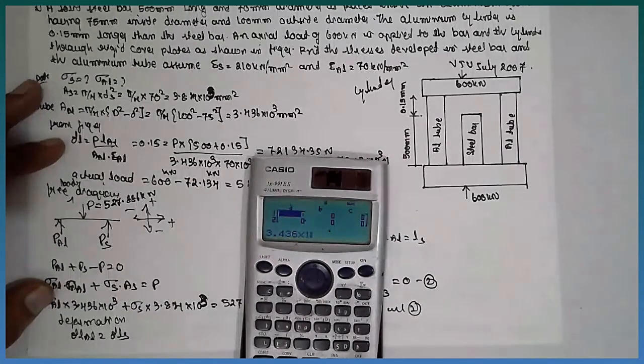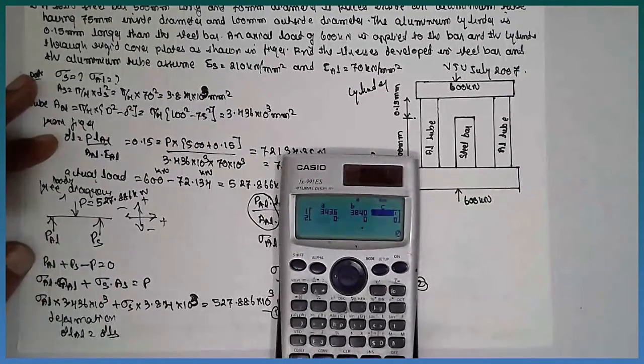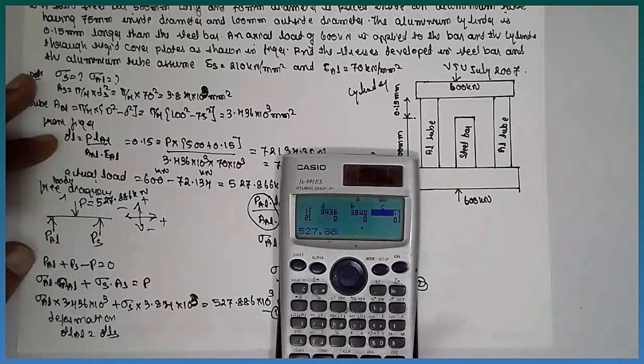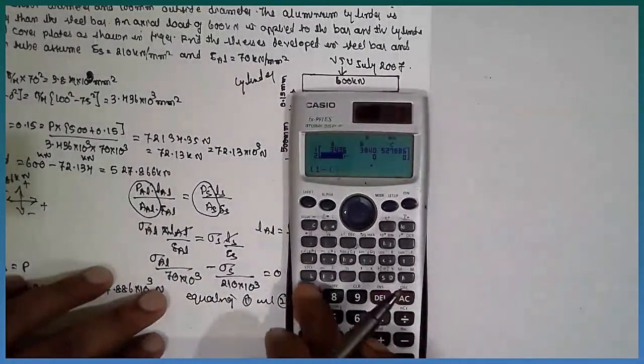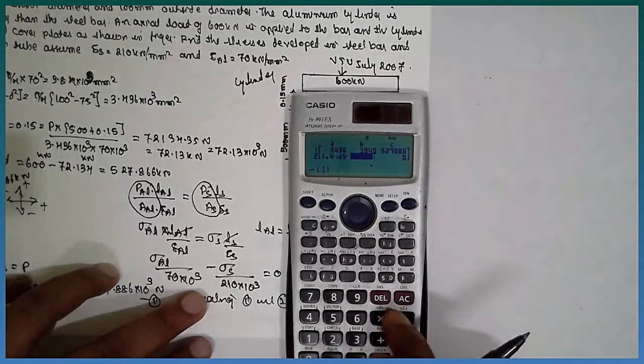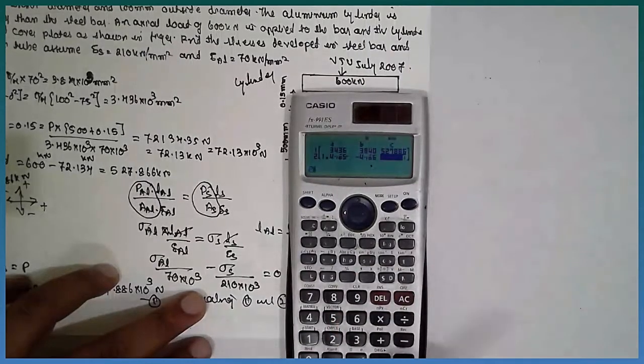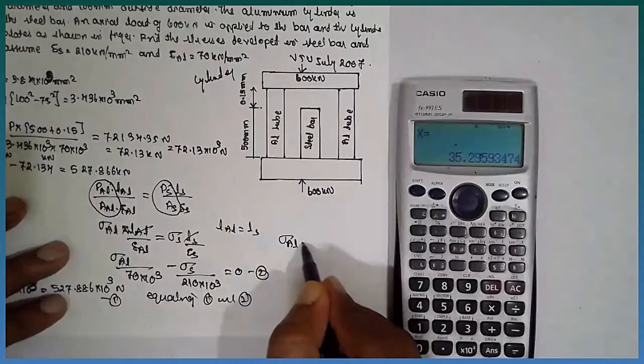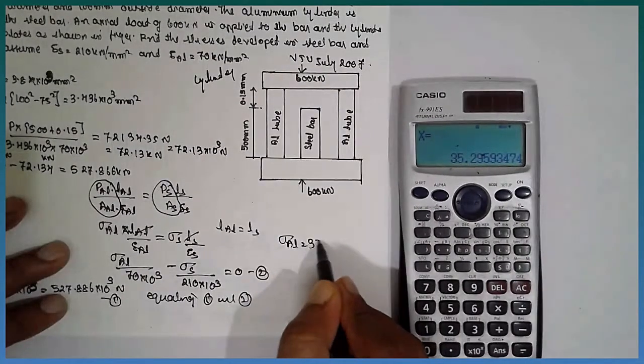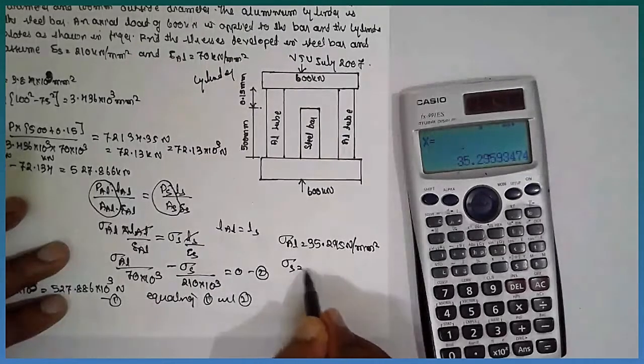3.436 into 10 raise to 3, 3.84 into 10 raise to 3, 527.886 into 10 raise to 3. Next value is 1 divided by 70 into 10 raise to 3 minus 1 divided by 210 into 10 raise to 3 equals 0. Answer is 35.295 Newton per mm square stress in the steel.